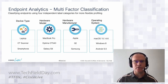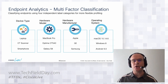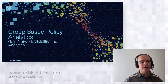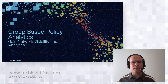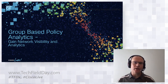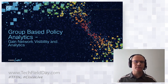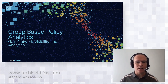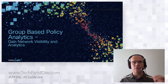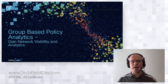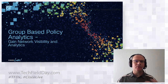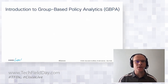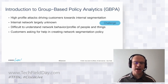Endpoint analytics is really trying to move those agentless devices from unknown into known structures. But that doesn't really solve the full problem, because once you have an endpoint identified, the question for network security is: what do you do with it? So we've developed a tool called group-based policy analytics that's really about looking at the network profile and then building analytics to answer that question.